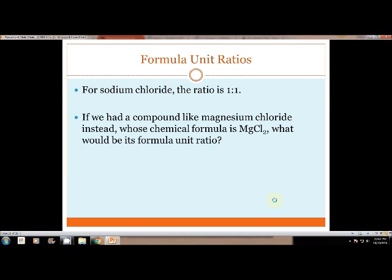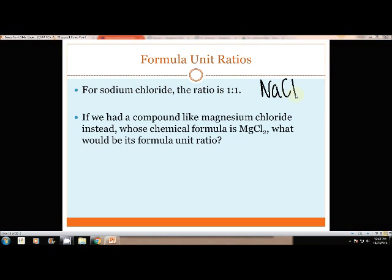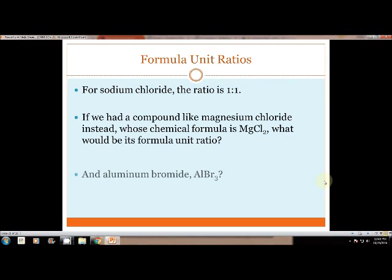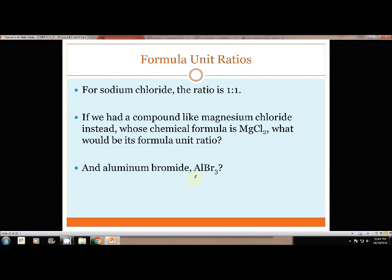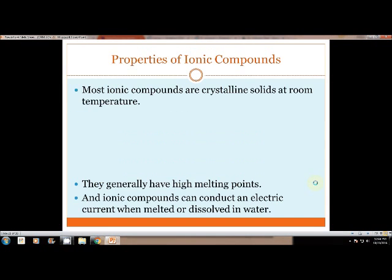Looking at sodium chloride, the ratio is 1 to 1. If there's no subscripts, then you imply there's a 1 there. If we had magnesium chloride, MgCl2, what's that ratio? 1 to 2, because we have 1 magnesium and there's a 2 after the chlorine. What about aluminum bromide? That would be 1 to 3, because there's 1 aluminum for 3 bromides.